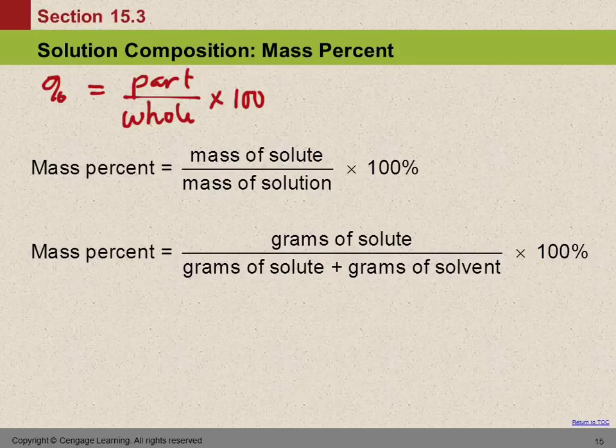Now, sometimes they get a little tricky with the questions, so I'm also showing you this equation, which is really the same thing. The mass percent equals the grams of solute divided by the grams of solute plus the grams of solvent. Because what's in the solution? There's two parts: the solute and the solvent.